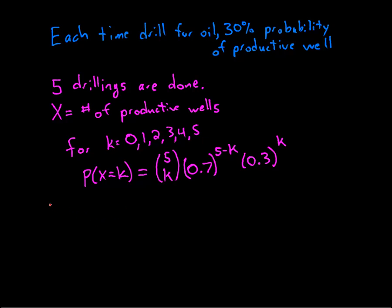So for example, if I wanted to compute the probability that I get at least two productive wells, well then how could I do that?